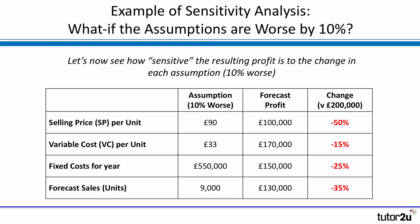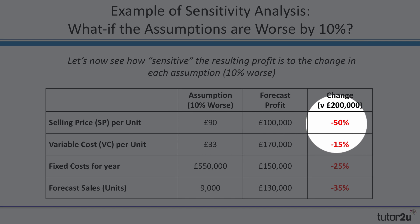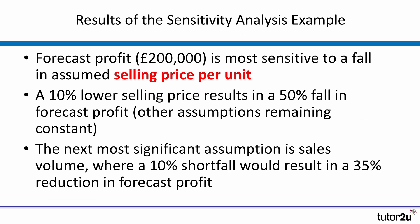If we sell 9,000 units instead of 10,000 — 1,000 fewer units than forecast — the profit becomes £130,000, which is 35% down. We can see the sensitivity of the forecast to each of the four different assumptions. The selling price per unit turns out to be the most sensitive assumption in terms of effect on the forecast — a 10% fall in selling price causes a 50% drop in profit. So that's an example of sensitivity analysis: our forecast profit is £200,000, and the most significant assumption is the selling price of £100 per unit.